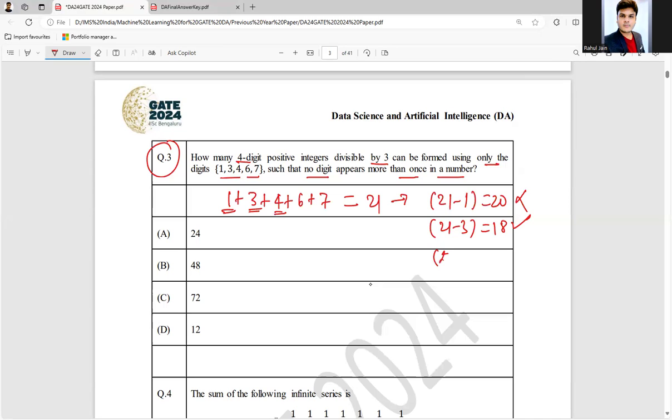Thereafter 4, if I am going to remove 4, 21 minus 4 that is 17. It is not divisible by 3.